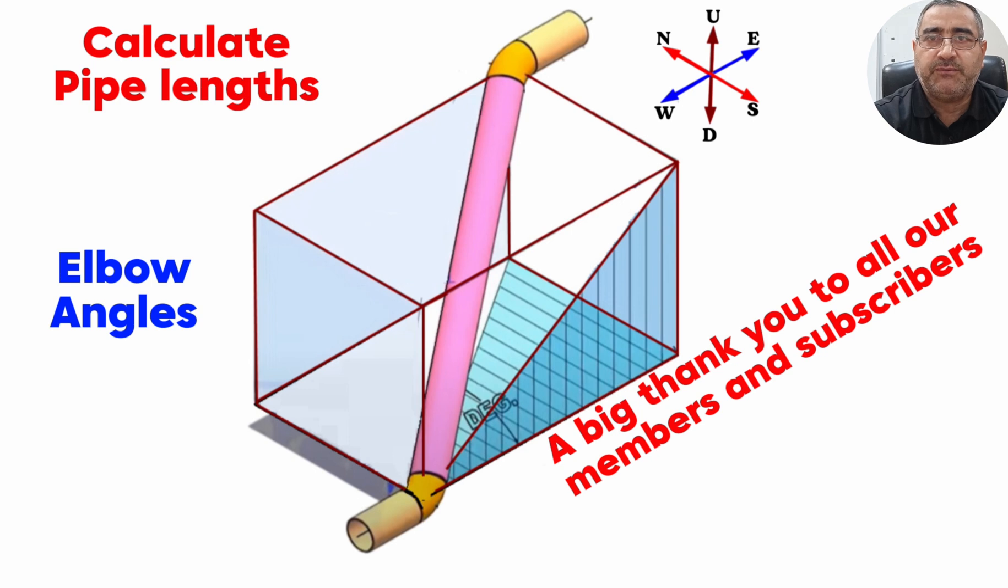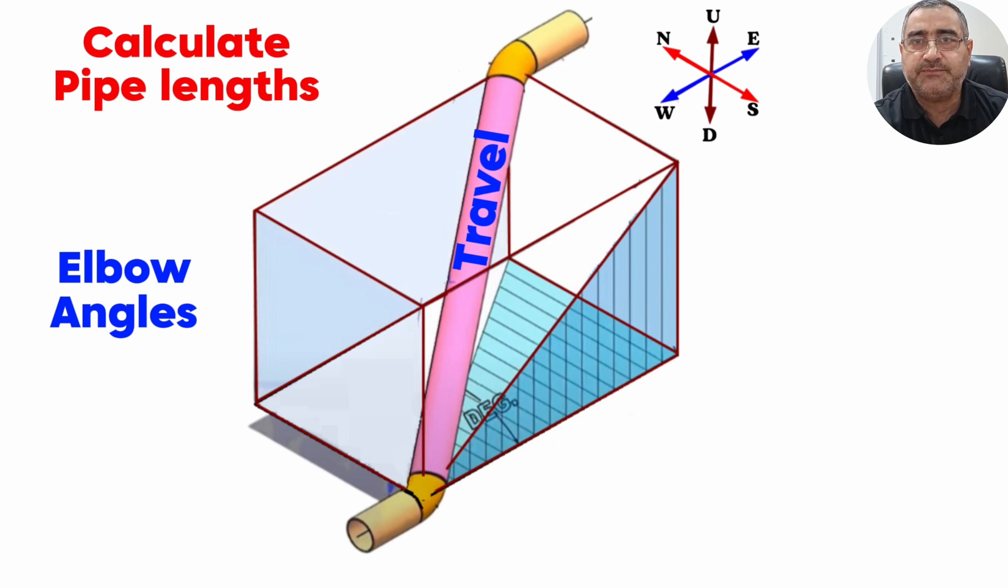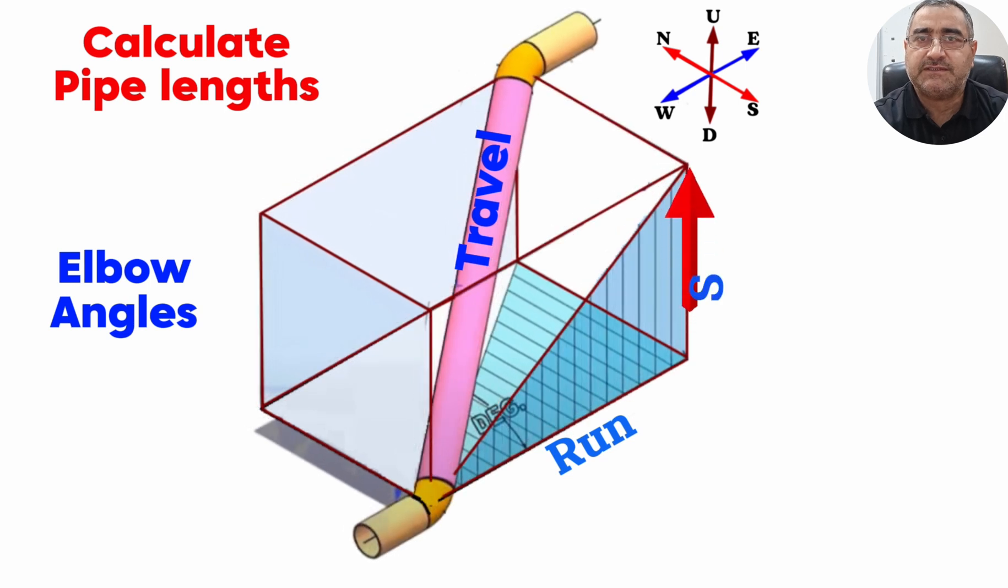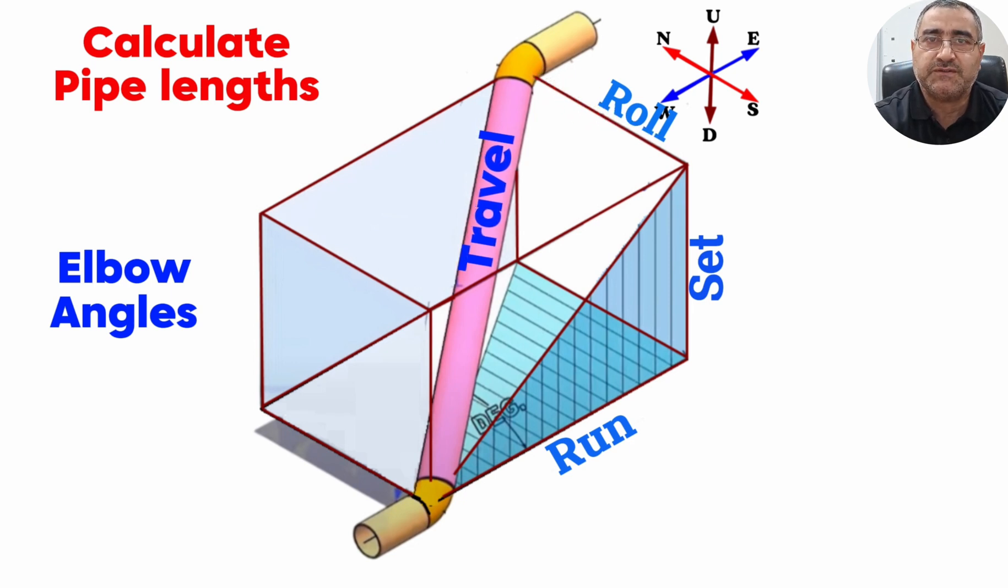In double rolling pipelines, to calculate pipeline sections we use three-dimensional positioning terms. The pipeline's eastward travel is known as the run. The pipeline's upward travel is called the set. And the pipeline's northward travel is referred to as the roll. These terms help accurately define the spatial positioning of the pipeline as it moves through different planes.